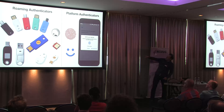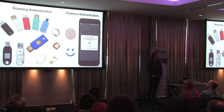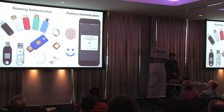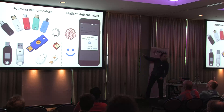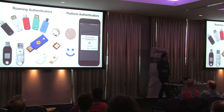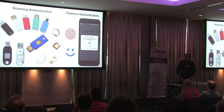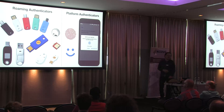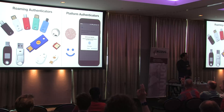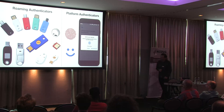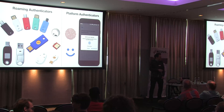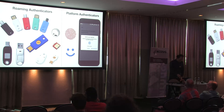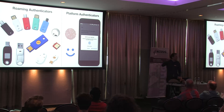The latest incarnation is the red one — a nano version that you can leave in your USB port. There's also this ring called the Token Ring. Interesting — they actually call it Token Ring. Who's old enough to know token ring? Those are roaming authenticators.